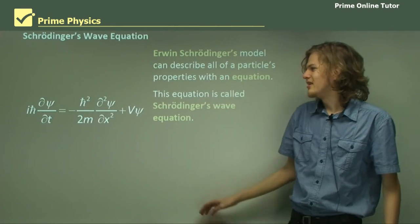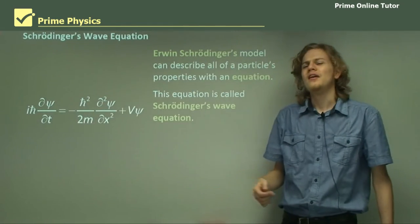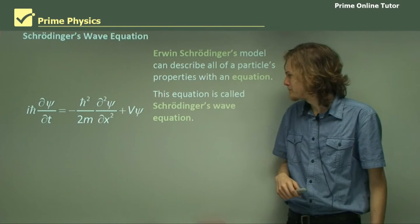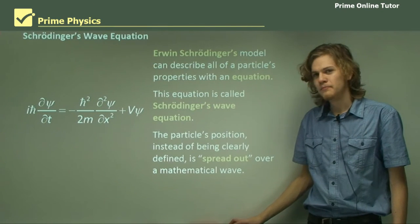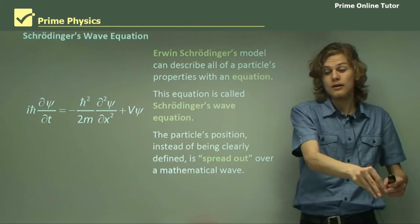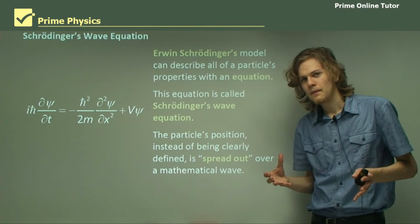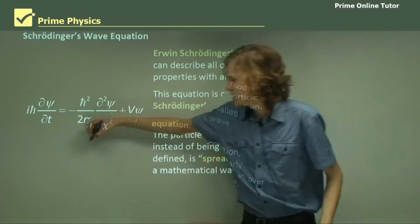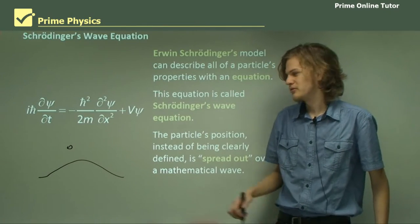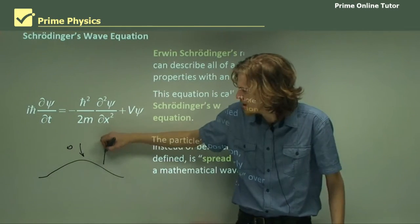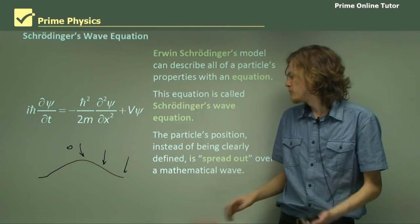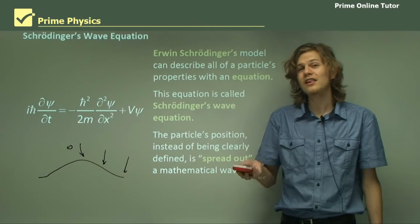You'll notice that there's also an i in the equation, and that has to do with complex numbers, which aren't really covered as part of this slideshow. The particle's position in Schrödinger's wave equation, instead of being very clearly defined — like the particle is here — is actually spread out. So instead of saying the particle is here, we say the particle is around here somewhere. It could be there, but it could be there as well. There's a little bit of a chance it could be over there. So the particle's position is not clearly defined.